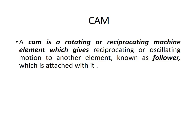CAM can also be defined as a rotating or reciprocating machine element which gives reciprocating or oscillating motion to another element known as follower which is attached with it. Thus, normally CAM is a rotating or reciprocating member while follower is a reciprocating or oscillating member.